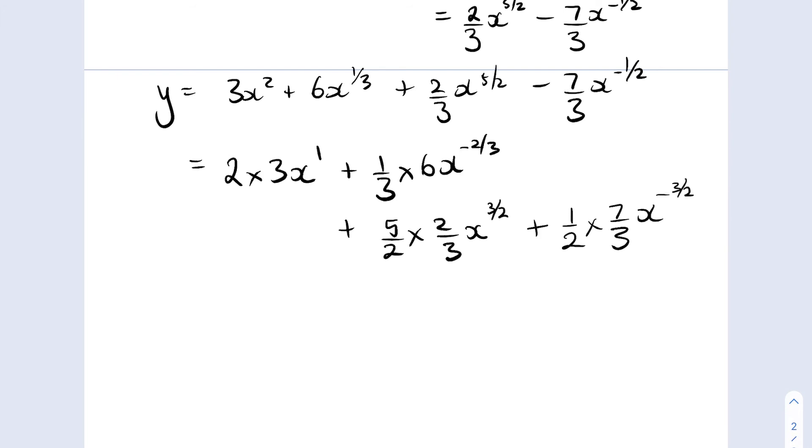Okay so it's almost done, I just need to simplify these terms. 2 times 3x to the one is just 6x. A third times 6 is 2. Now what I've got here is two fractions being multiplied together and those two terms simplify so it'll be five thirds.